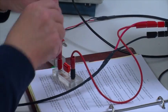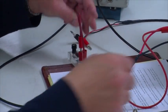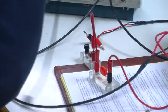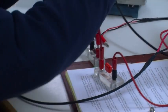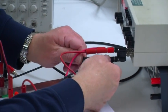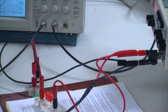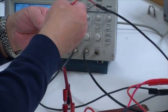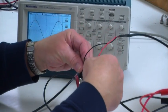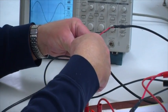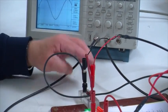We'll come from the output of the function generator, go to this capacitor, then from this capacitor to this resistor, and then complete the circuit by going from the resistor back to the ground of the circuit. Then we'll have channel two of the oscilloscope look at the voltage across this resistor.